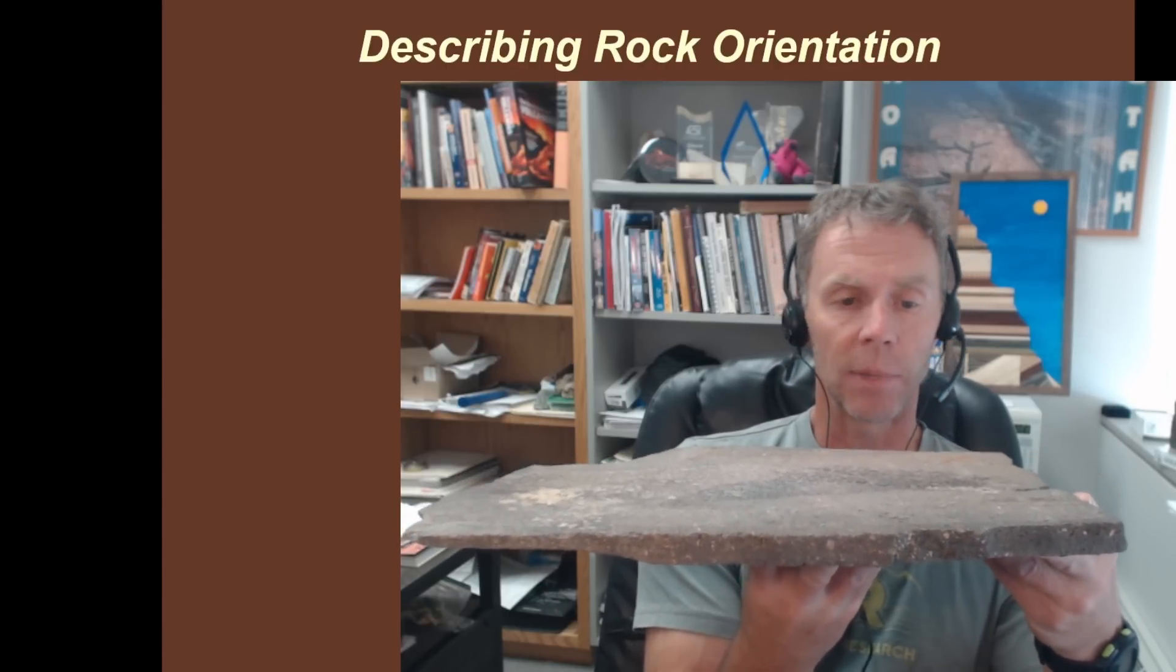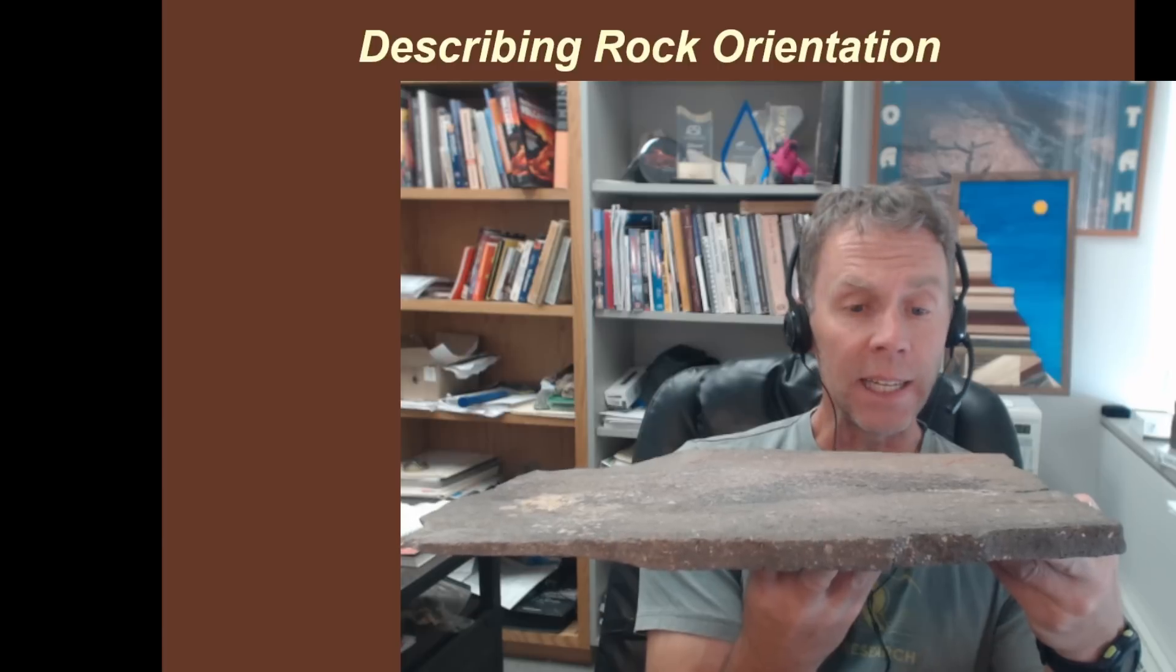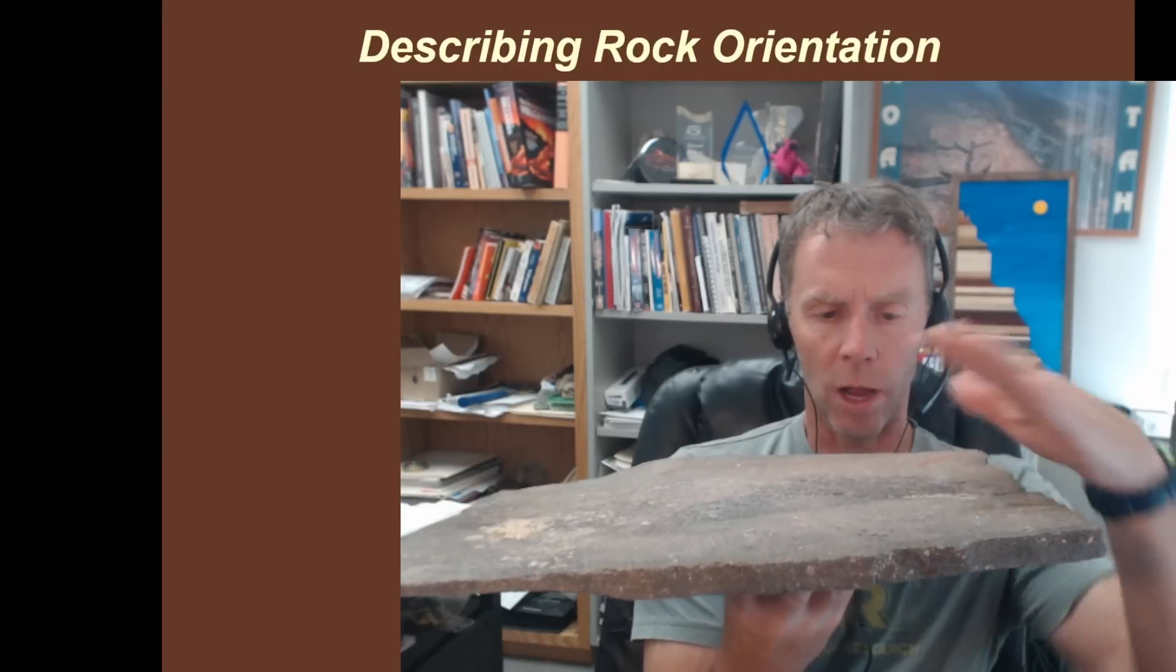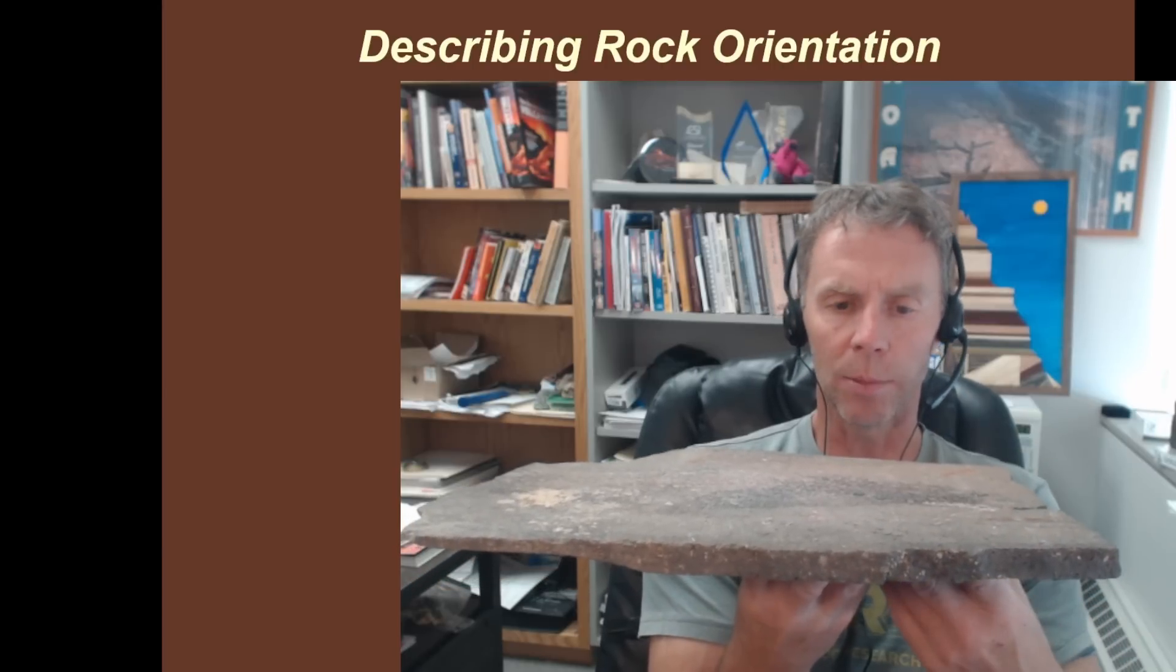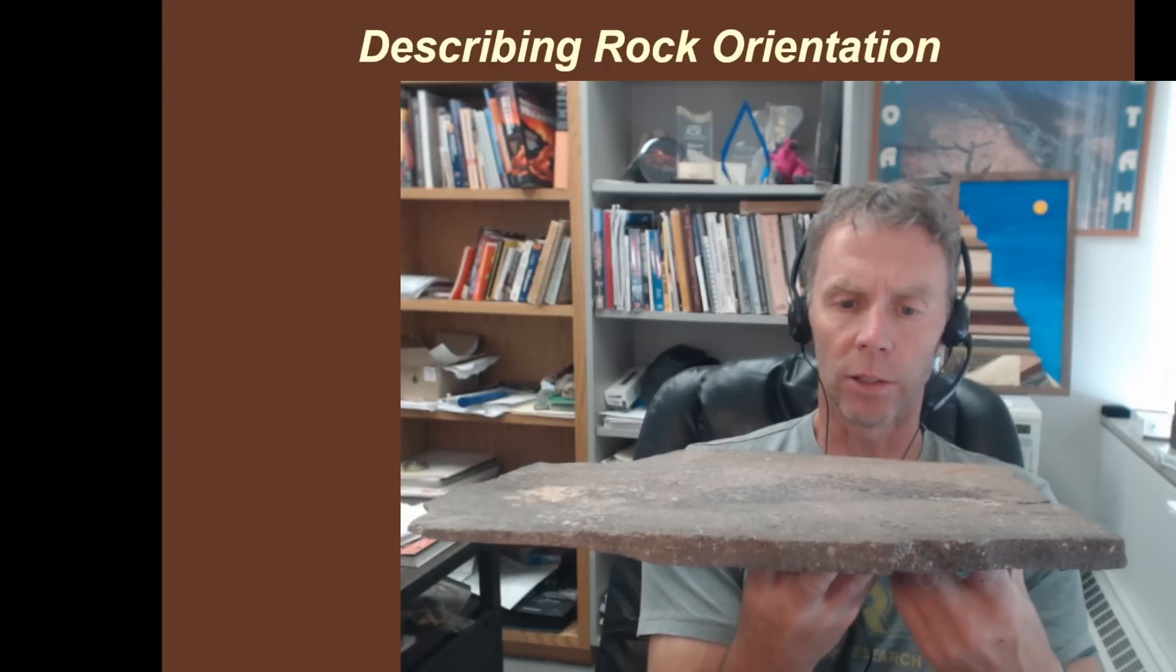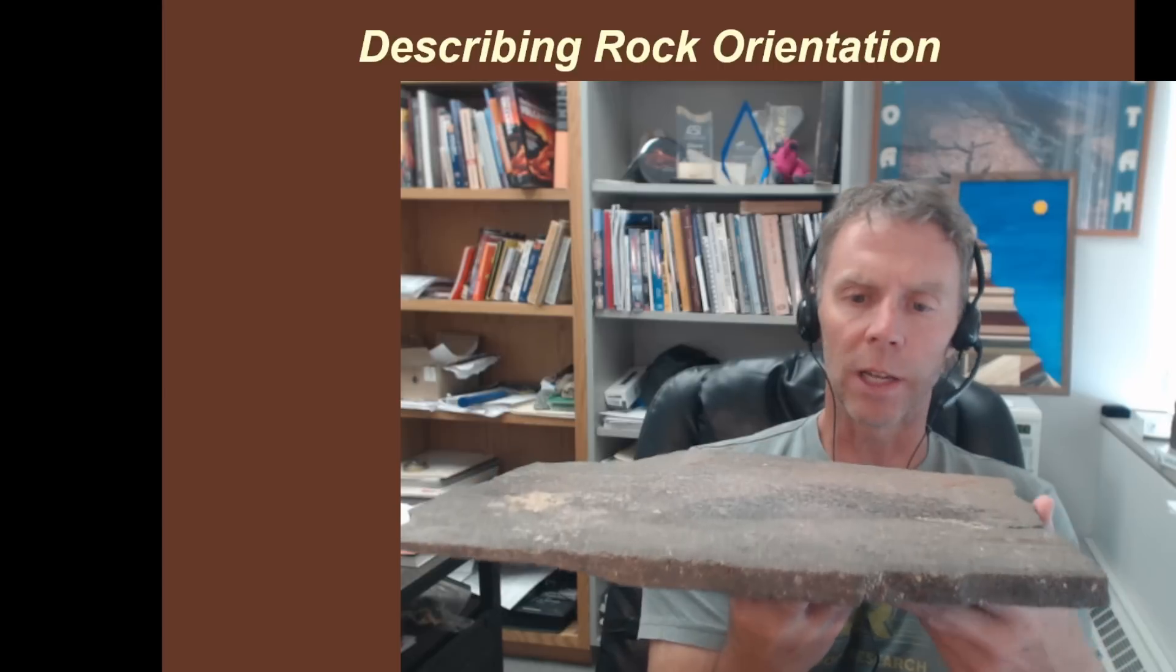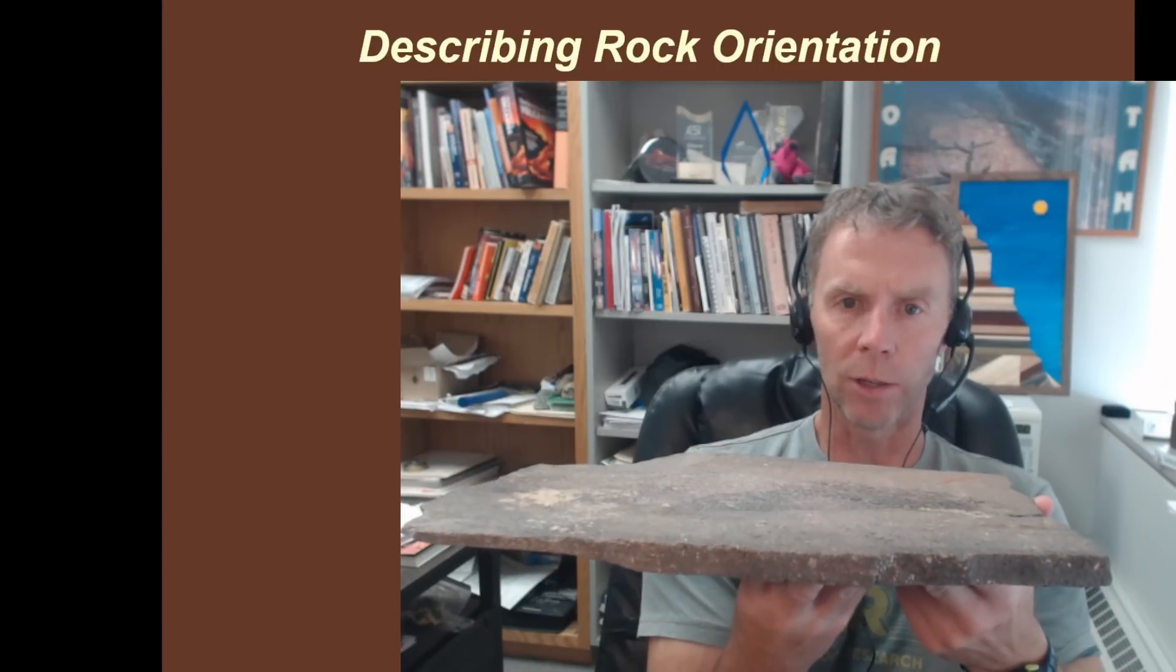Think about how you would describe the orientation of this rock right here. Words I commonly hear from students are things like it's level, it's flat, it's even. But the best word to describe this planar rock body is that it's horizontal. It's oriented horizontally. That should make sense to you, just the way like your waiter carries out your meal and drinks when you're at a restaurant.